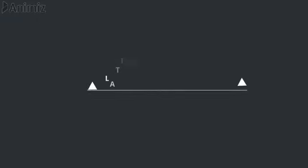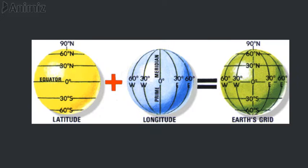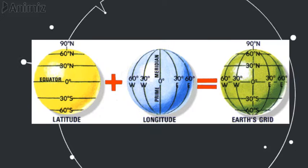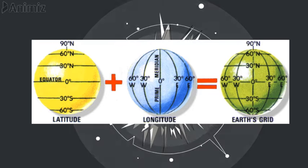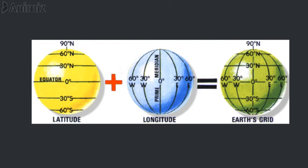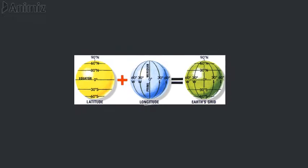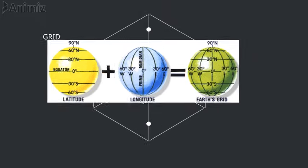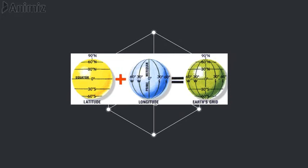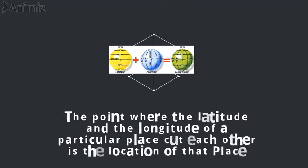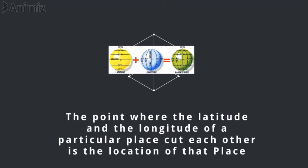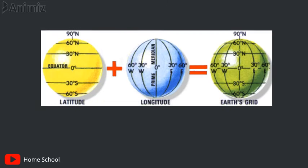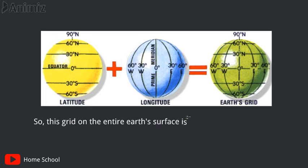These latitudes and longitudes together make a grid that covers the entire earth's surface, and every point of this grid is one location. So whenever we want to find any location of a place or a person, we find it in this grid. The point where the latitude and the longitude of a particular place cut each other is the location of that place. This grid on the entire earth's surface is used to find the location of different places.